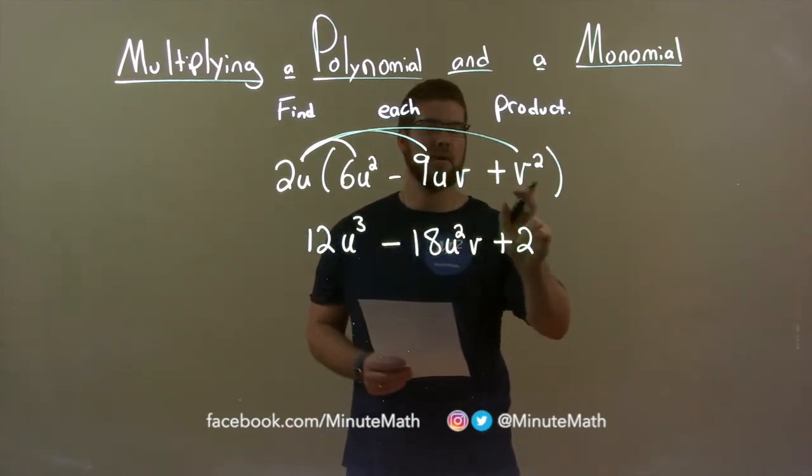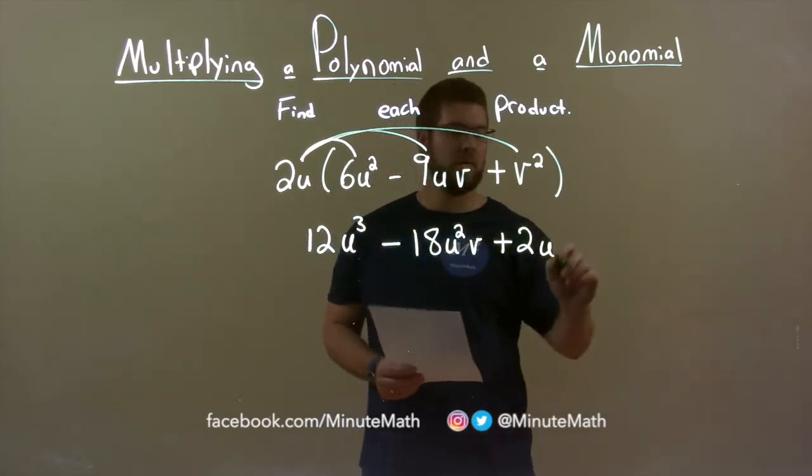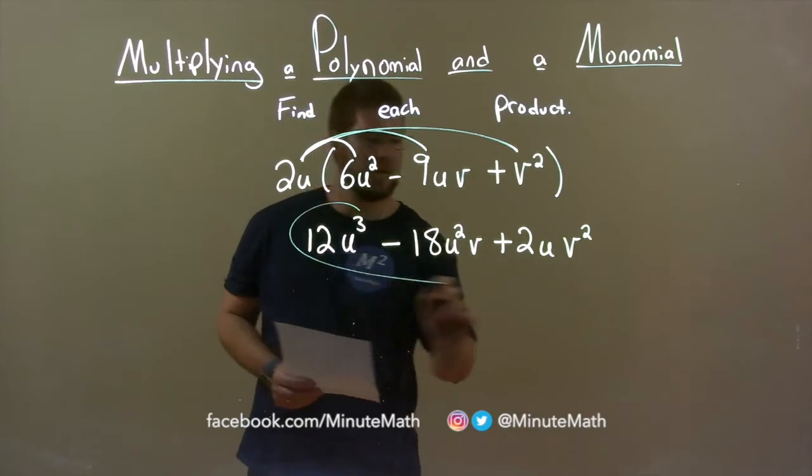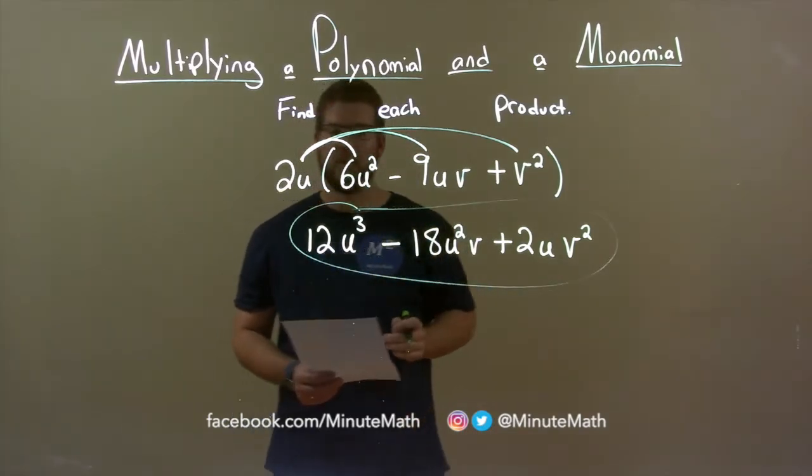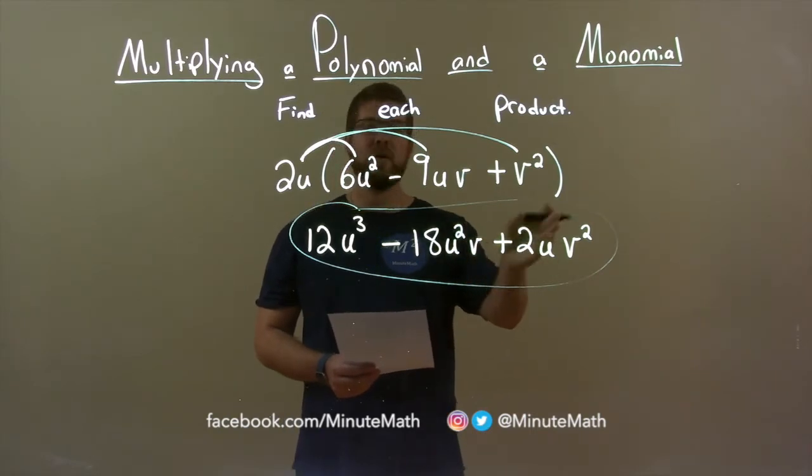u - there's no u here, so just this 1u comes down. There's no v here, but there's a v squared here, so v squared comes down. And now our final answer is 12u to the third power minus 18u squared v plus 2uv squared.